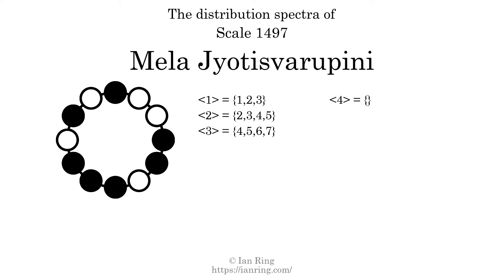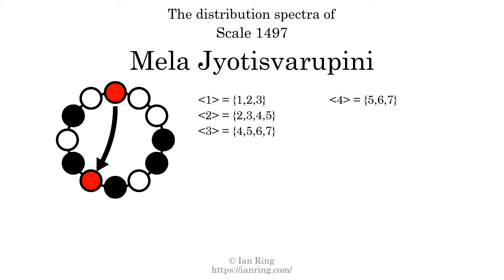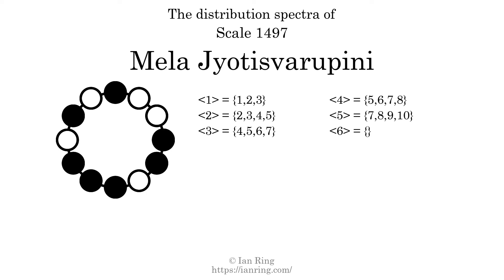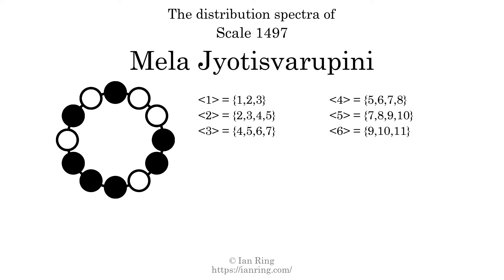The generic interval of 4 scale steps comes in 4 different specific interval sizes: 5 semitones, 6 semitones, 7 semitones, 9 semitones, and 10 semitones. The spectrum width of this generic interval is 3. The generic interval of 6 scale steps comes in 3 different specific interval sizes: 9 semitones, 10 semitones, and 11 semitones. The spectrum width of this generic interval is 2.